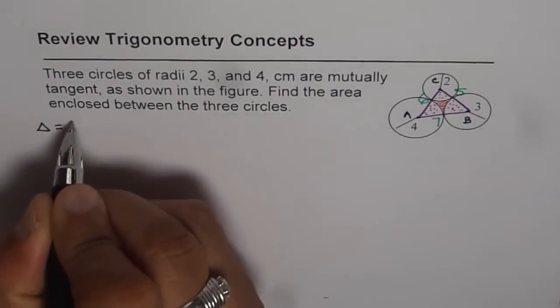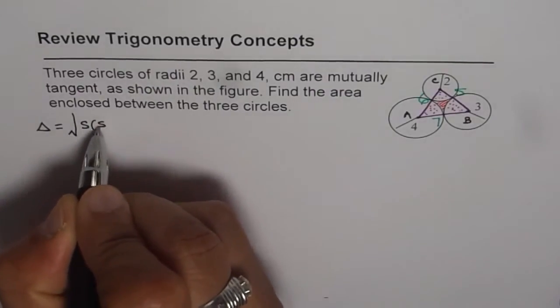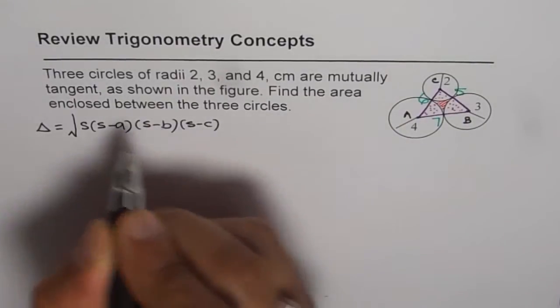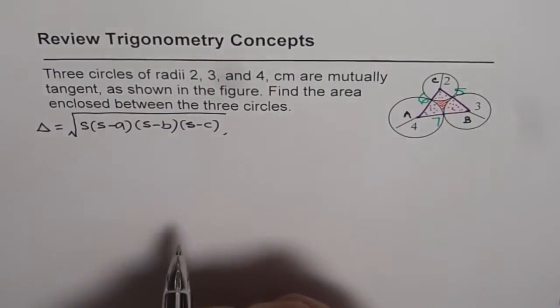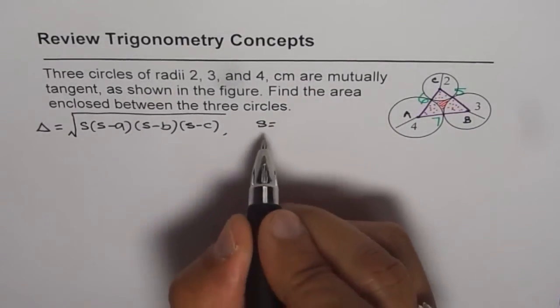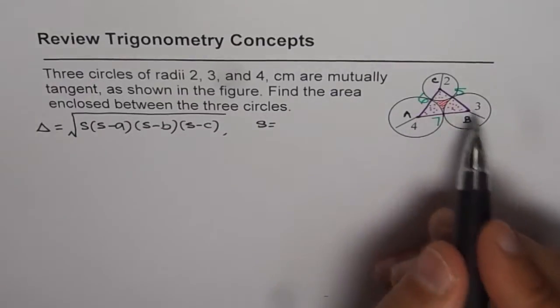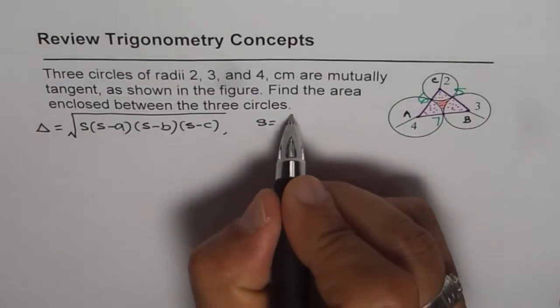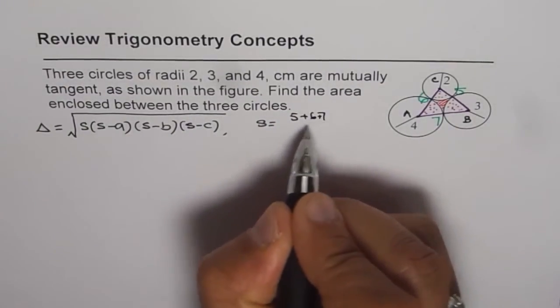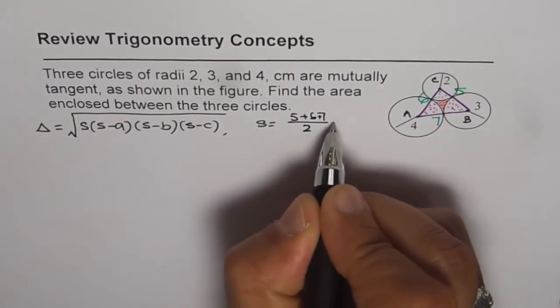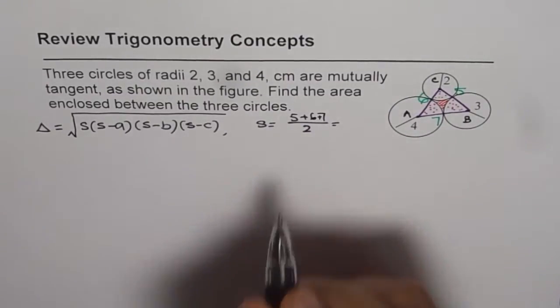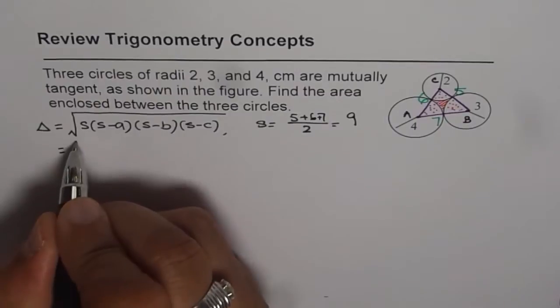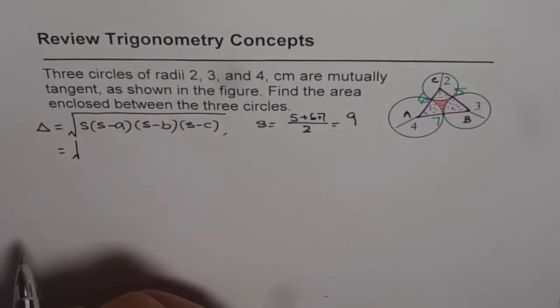Area of triangle is equal to square root of S times (S minus A) times (S minus B) times (S minus C). Now do you remember what is S? Yes, it is semi-perimeter. Now in this case the sides are 5, 6 and 7. Let me straight away write down the semi-perimeter. Since we know the semi-perimeter and the sides, we can find area of our scalene triangle.